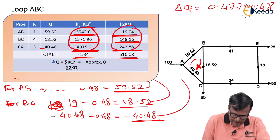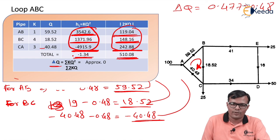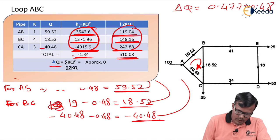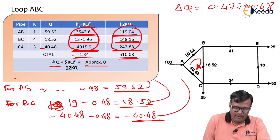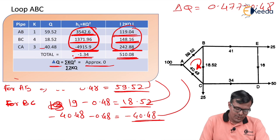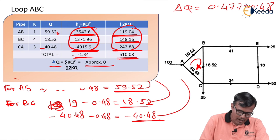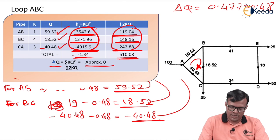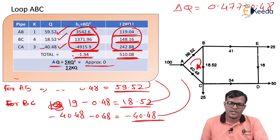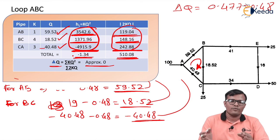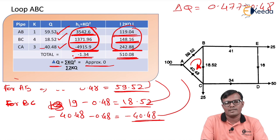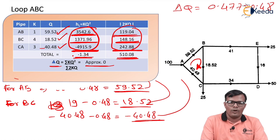Delta Q = −1.34 / 510 ≈ 0, which is approximately zero. So the discharges in pipes AB, BC, and CA are finalized as 59.52, 18.52, and 40.48 respectively. It is clear that by using this method we revised only the discharges in loop ABC, and it was not necessary to revise the discharges in the BEDC loop. That is all. Thank you.